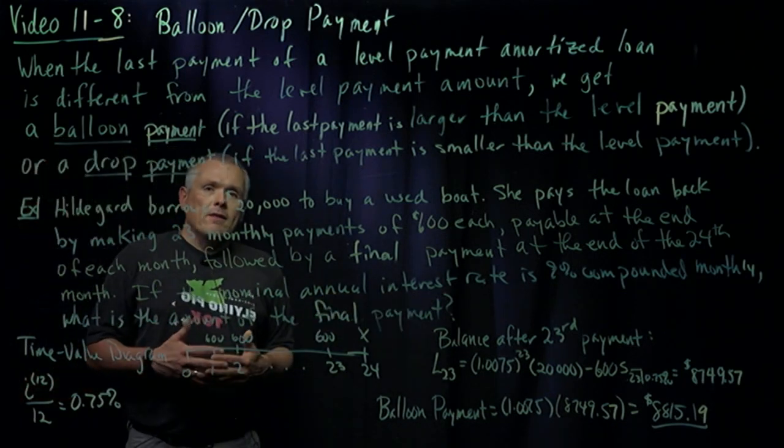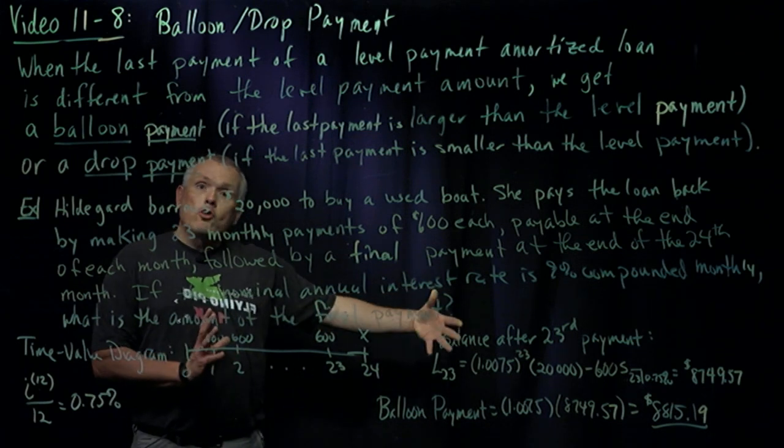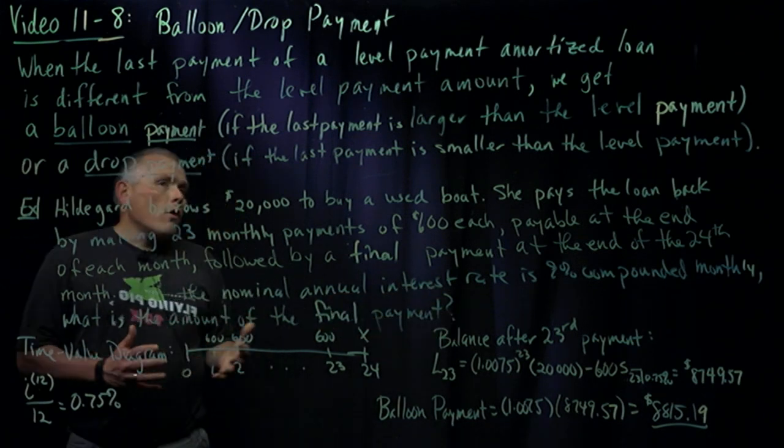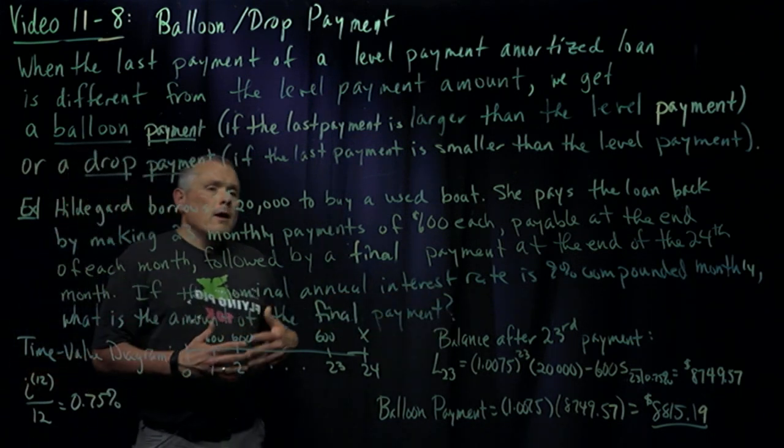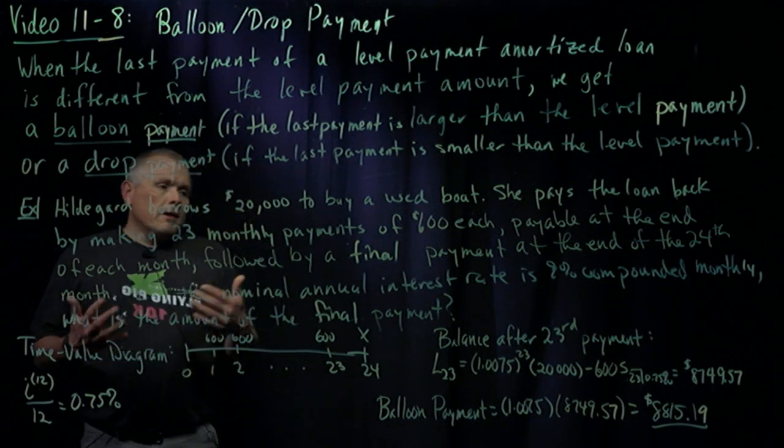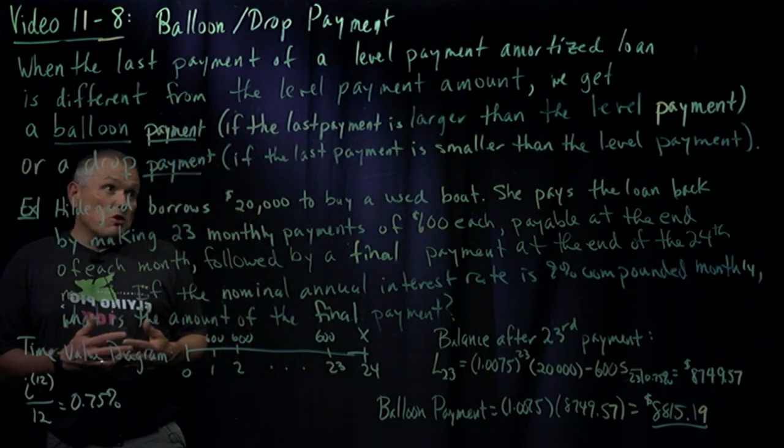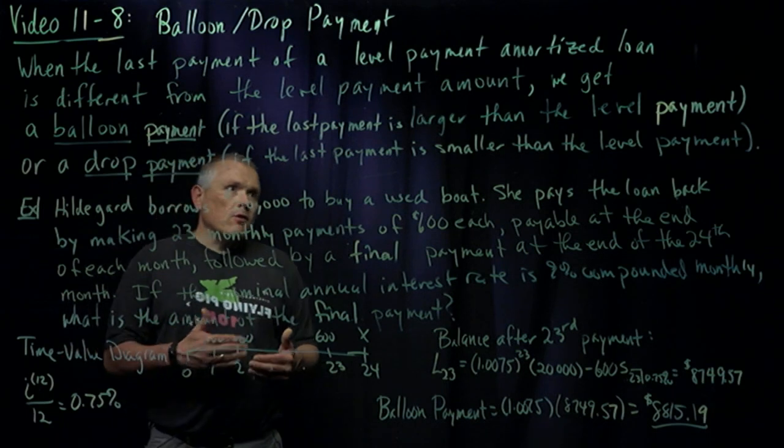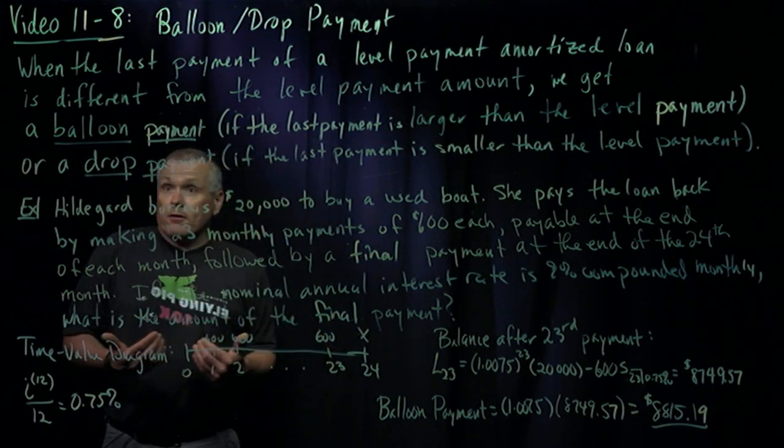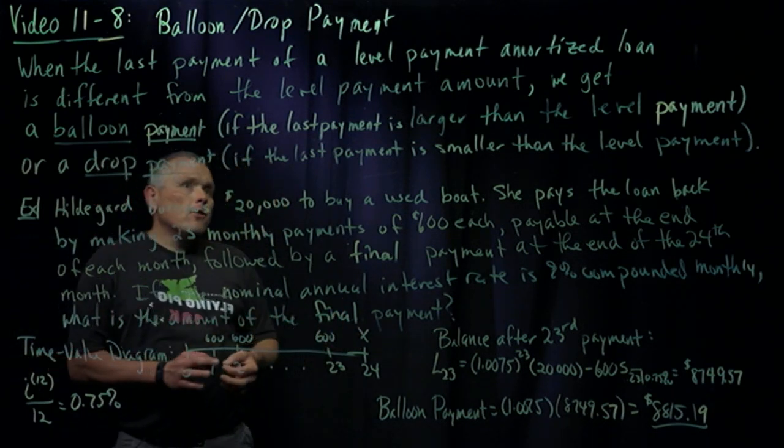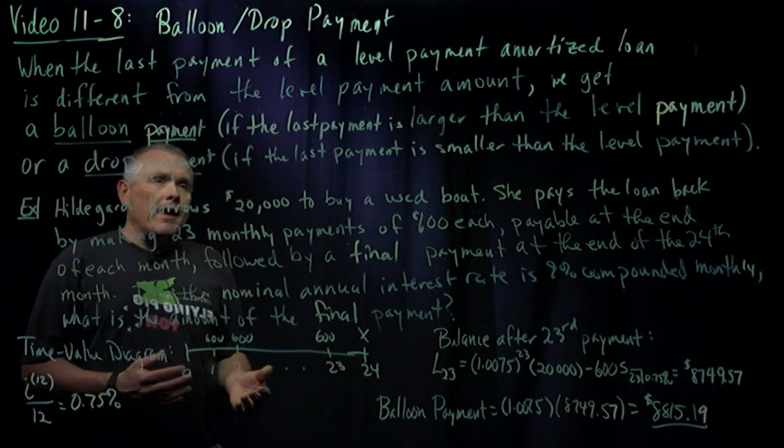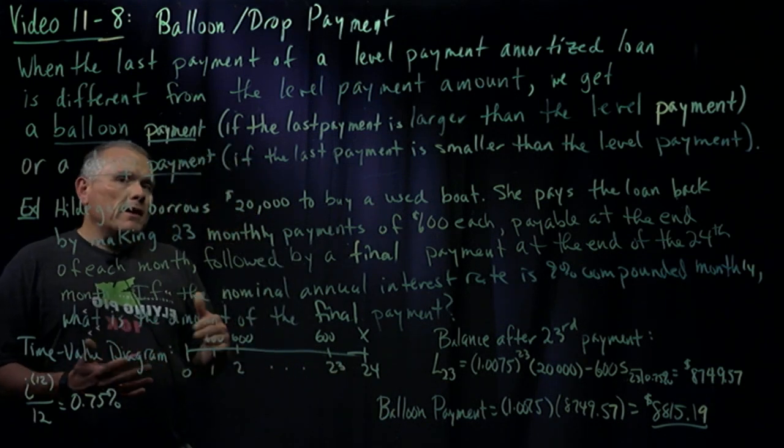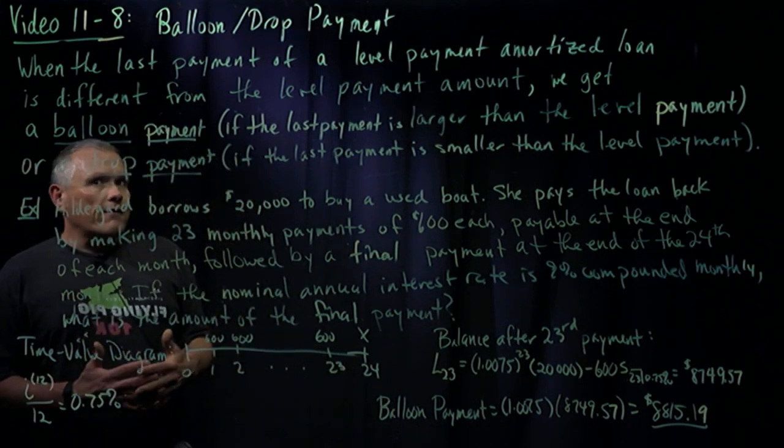So you have a final larger payment to make at the end. Or it could be that when your payments were calculated to start with, your payment got rounded up by pennies, and so your last payment will be a little bit smaller at the end because you've actually been paying slightly higher than what you needed to pay over the course of your loan. You get a payment that's slightly smaller at the very end.